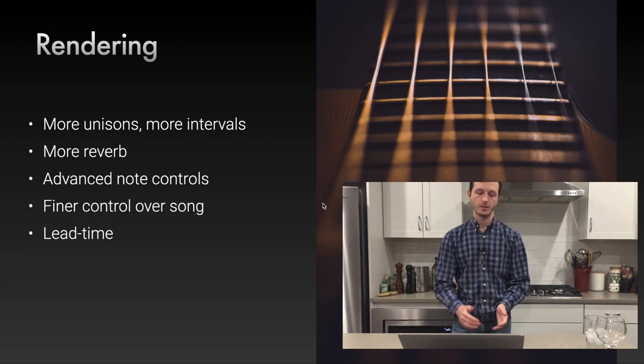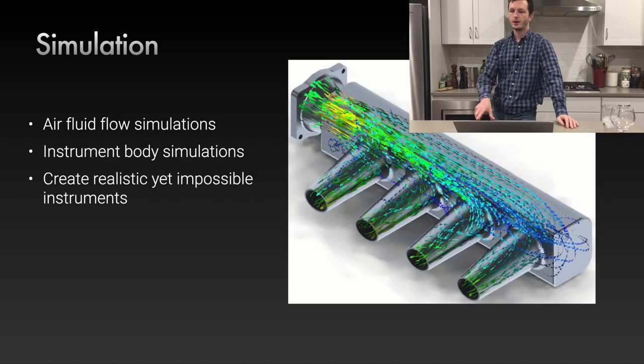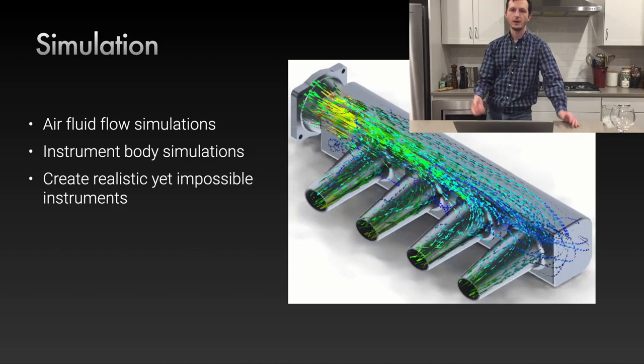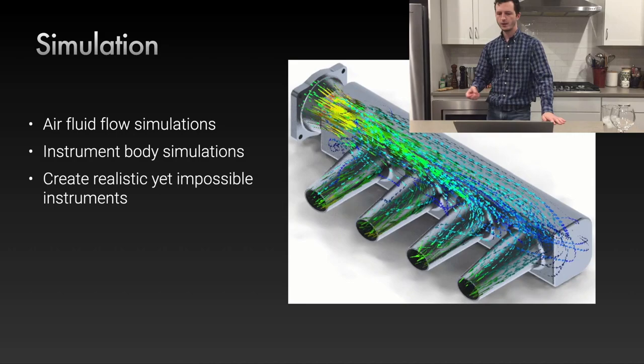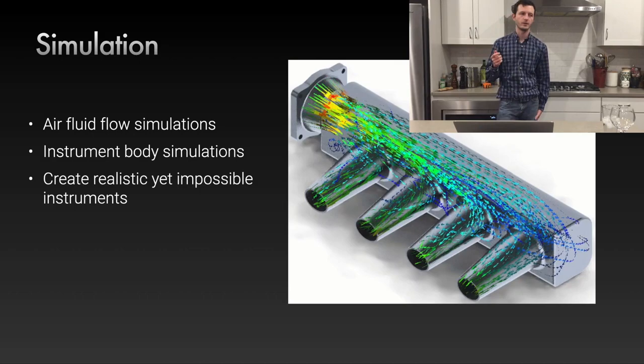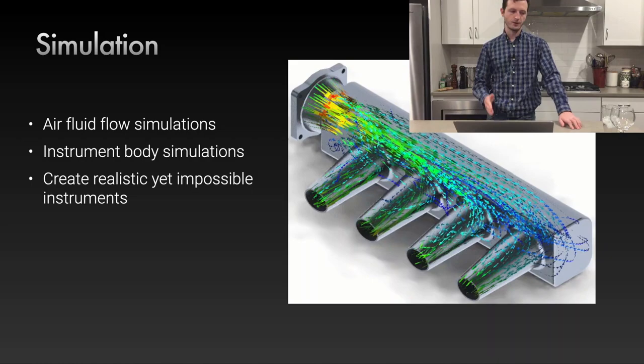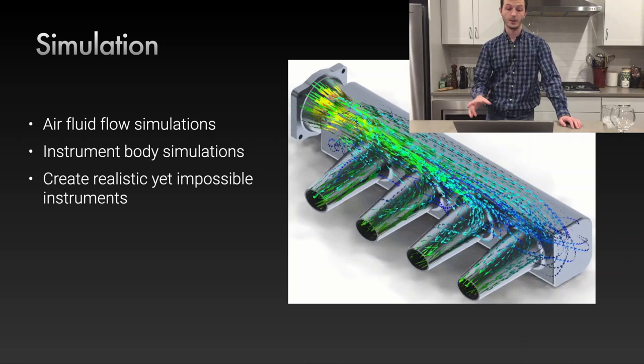Simulation is a really cool field in Python. You can do fluid flow simulations for perfectly precise reverb, and instrument body simulations for more realistic, physically grounded instruments. The key takeaway: you can build instruments that are realistic and have physical basis so they sound real — but you can also change things about the simulation to create otherworldly, impossible instruments and something really creative.